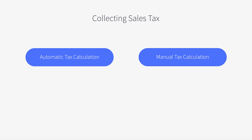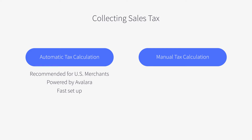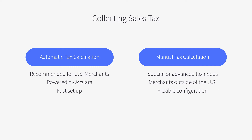There are two methods for collecting sales tax through BigCommerce. For businesses in the United States, you can use automated tax calculation powered by Avalara, the leader in sales tax automation. If you have more advanced tax needs or operate outside the United States, you will need to set up taxes manually through BigCommerce.